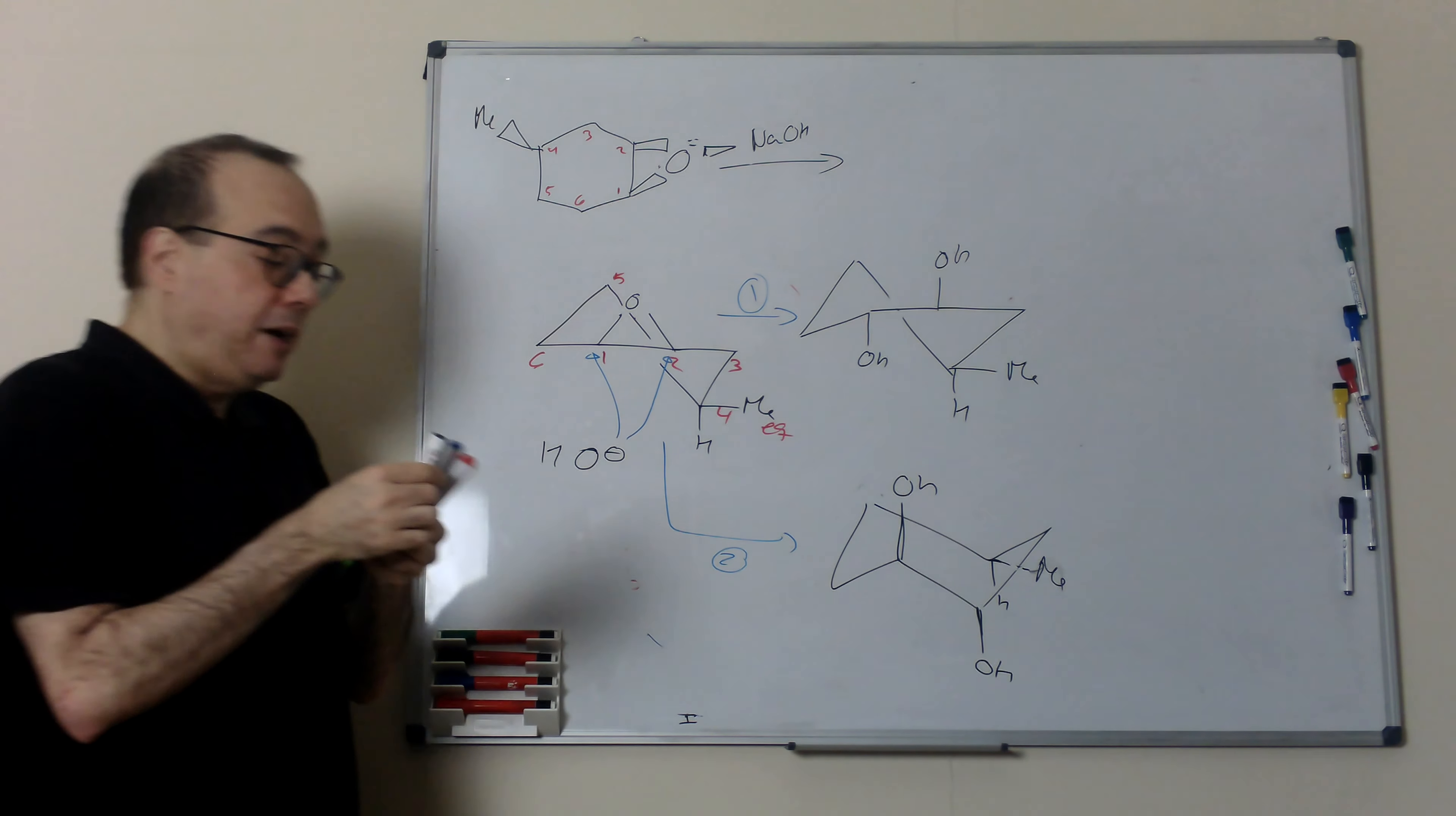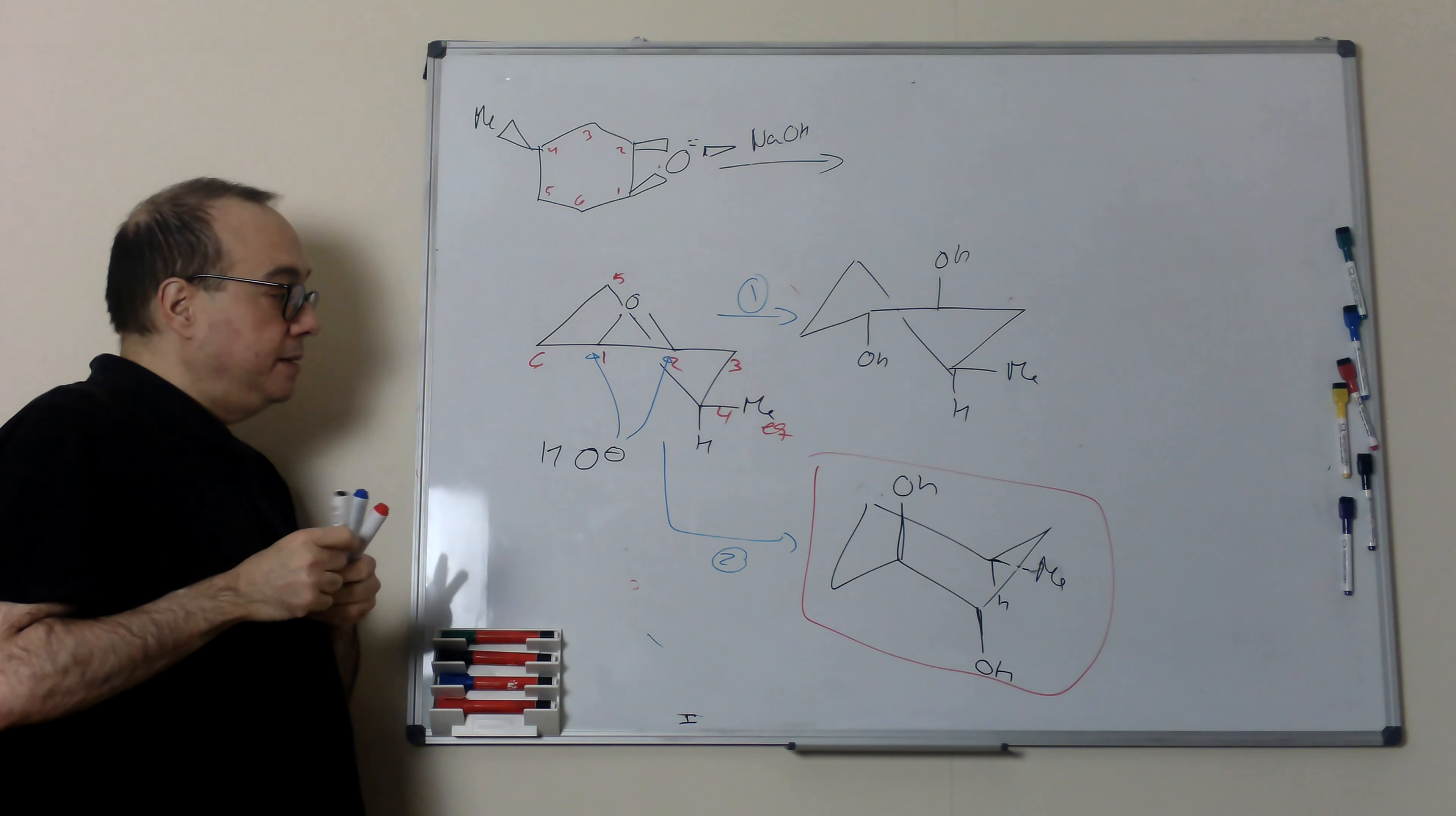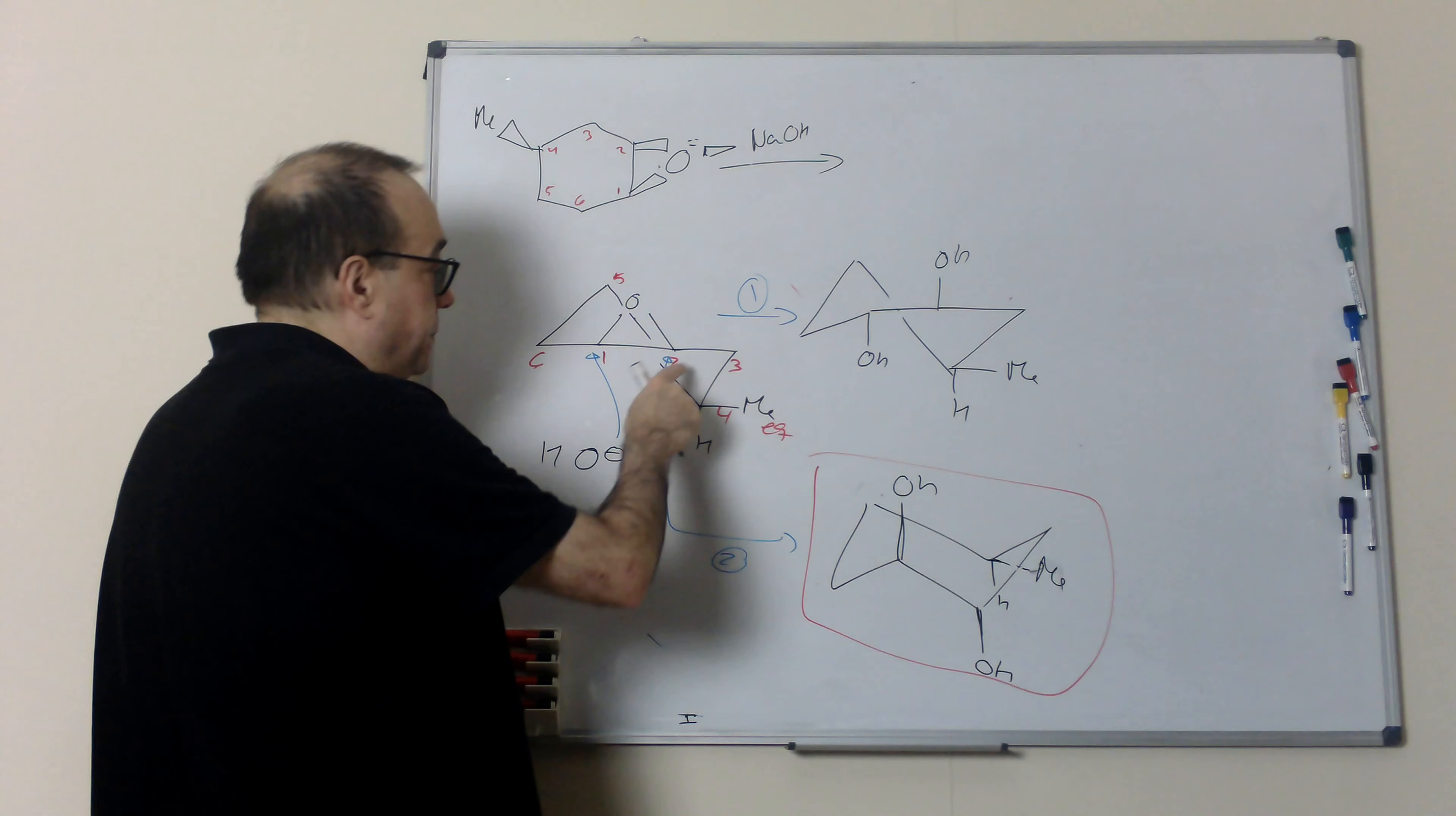That means, which would be more stable? The one that looks like a chair. Then the only thing that I need to do is to do the reaction at carbon number two.